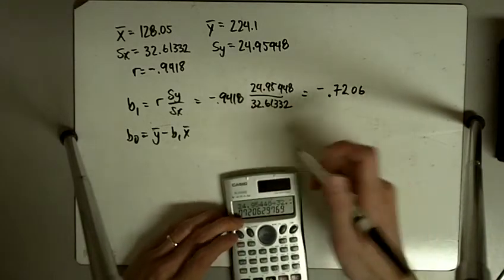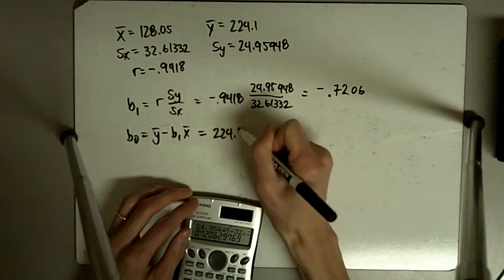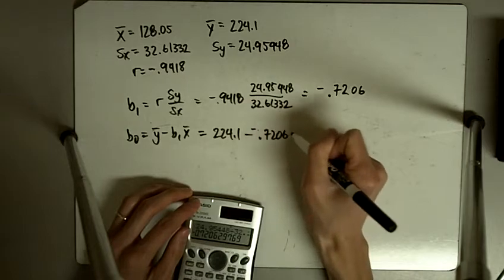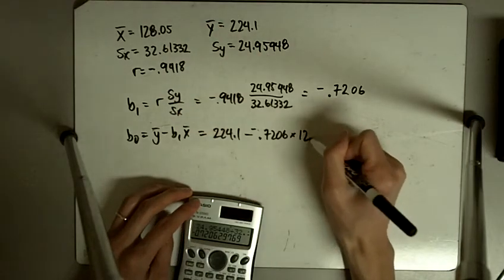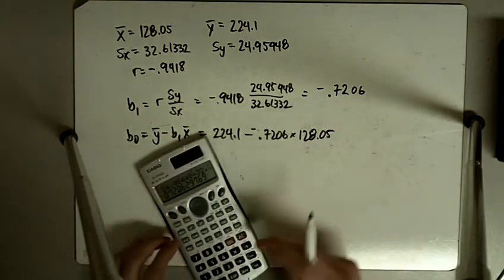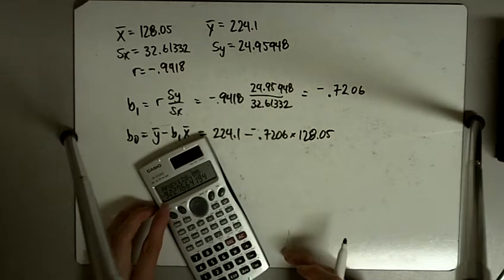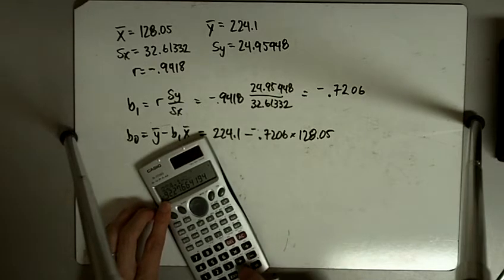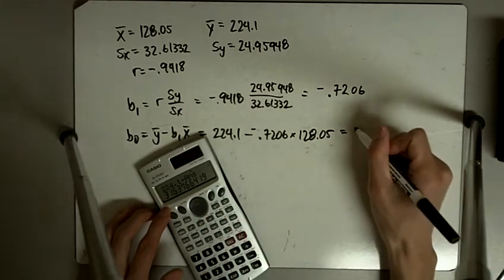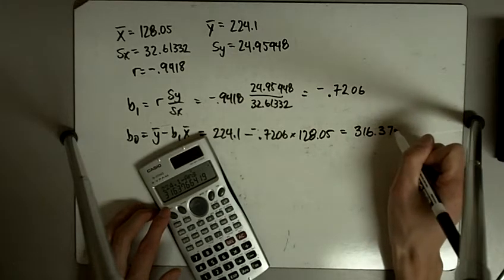All right, so plugging this in now, I use Y bar as 224.1 minus negative 0.7206 times my X bar, 128.05. So I'm going to just take that existing number, multiply it by 128.05, and I'm going to take 224.1 and subtract off that number. So here I have 316.377.